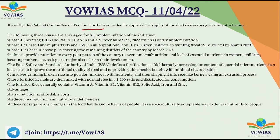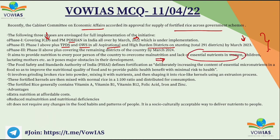The Cabinet Committee on Economic Affairs approved the supply of fortified rice across different government schemes in three phases. Phase 1 covers the Integrated Child Development Scheme and PM Poshan across all of India by March 2022. Phase 2 includes TPDS and OAWS in all aspirational and high-burden districts for stunting by March 2023. Phase 3 aims to cover all districts of India. The FSSAI defines fortification as a deliberate increase in essential micronutrients to improve nutritional quality. Fortified kernels are mixed with normal rice in a ratio of 1:100 and will contain Vitamins A, B1, B12, folic acid, iron, and zinc.